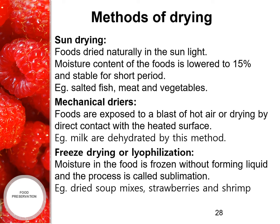The second method is mechanical dryers, where foods are exposed to a blast of hot air or dried by direct contact with a heated surface. For example, milk is dehydrated by this method. The third method is freeze drying or lyophilization, where moisture in the food is frozen without forming liquid — a process called sublimation. Examples include dried soup mix, strawberries and herbs.